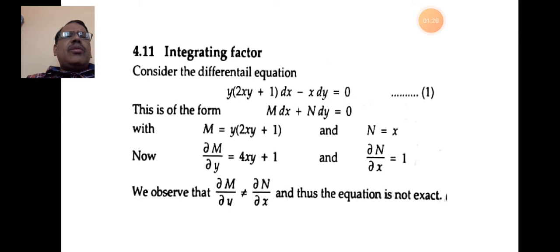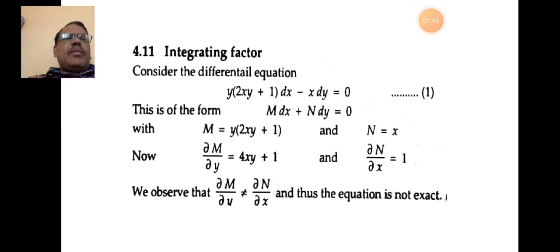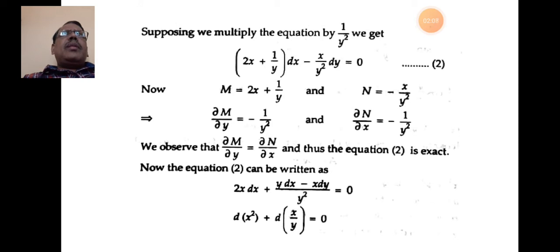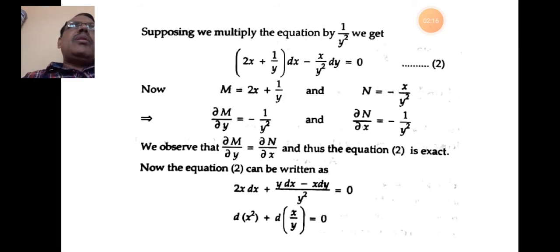The given equation is y(2xy + 1)dx − x dy = 0, where M = 2xy + y and N = −x. Here ∂M/∂y = 4xy + 1 and ∂N/∂x = −1. The equation is not exact. Suppose we multiply the given equation by 1/y². This factor 1/y² is called an integrating factor.